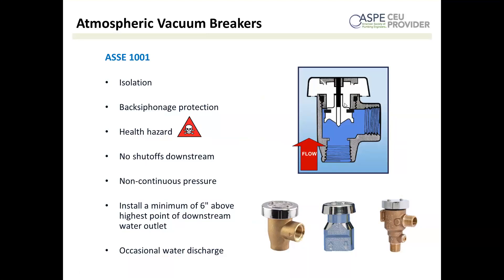You cannot use an atmospheric vacuum breaker for continuous pressure because the vent float can get stuck in the up position if constantly pressurized. Because of that, you cannot put any shutoffs downstream. It must also be installed a minimum of six inches above the highest downstream water outlet, because height is pressure — every foot of water column creates about 0.4 PSI. They can occasionally discharge water, but spill-resistant vacuum breakers are available. Applications include lawn sprinklers, parlor sinks, dishwashers, washing machines, and process tanks.